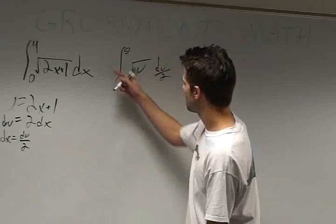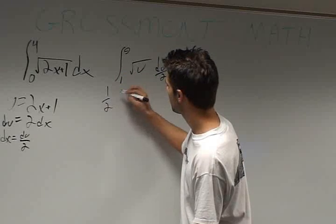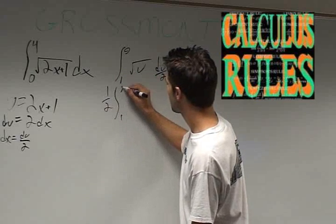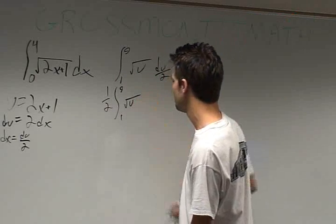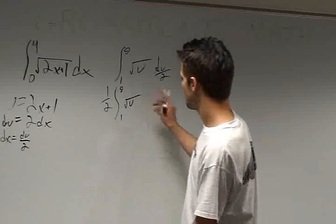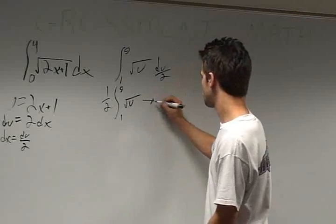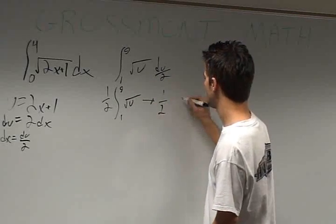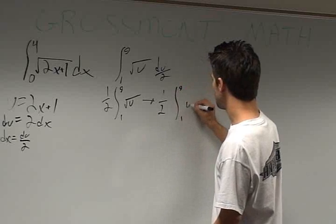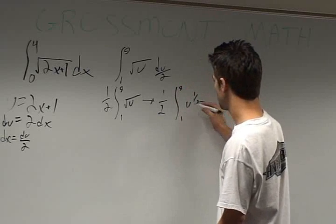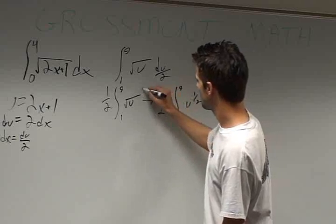We rewrite this as 1 half times the integral from 1 to 9 of square root u du. We can write this as 1 half times the integral from 1 to 9 of u to the 1 half du.